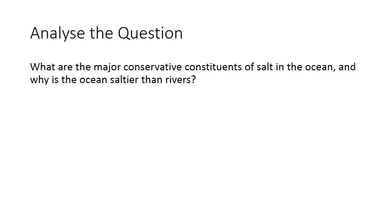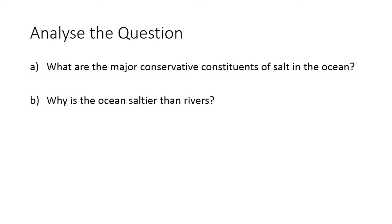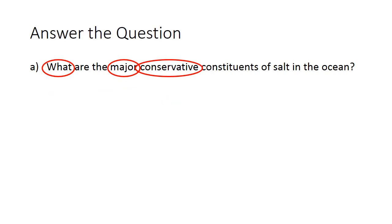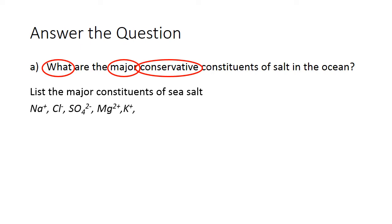The first question asked: what are the major conservative constituents of salt in the ocean, and why is the ocean saltier than rivers? The first thing to do with any question is split it up and find out how you're going to answer it. Split this into two parts: what are the major components of salt, and why is the ocean salty? Then identify the key terms. For 'major conservative constituents,' we're basically looking for a list of the major constituents of sea salt.